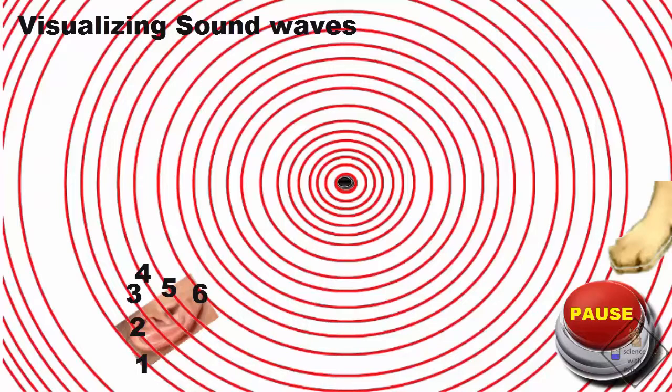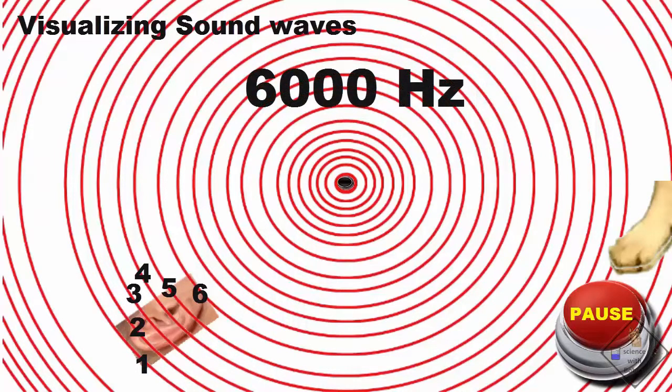And since each line represents 1,000 waves, that means in one second, 6,000 waves are striking the ear. So the frequency from this sound source is 6,000 hertz.